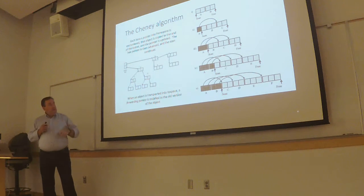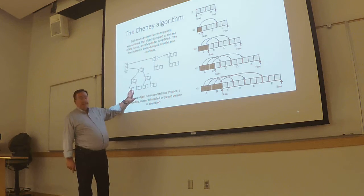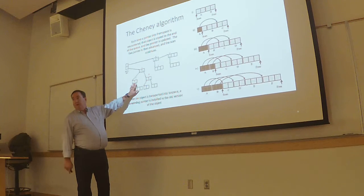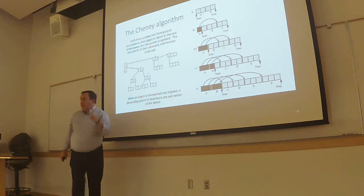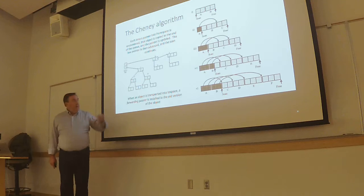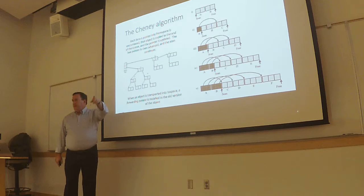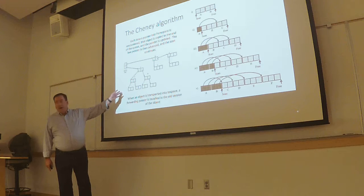When you copy over C, you modify the header of the old ghost copy in the from-space to indicate C no longer lives there — this is the forwarding address. Any time while scanning you encounter a pointer to something already copied, you just update the pointer. If it hasn't been copied, copy it over and update. If it's already been copied, just update. Maintaining these forwarding addresses is really important — otherwise you can easily copy things multiple times or go into cycles.